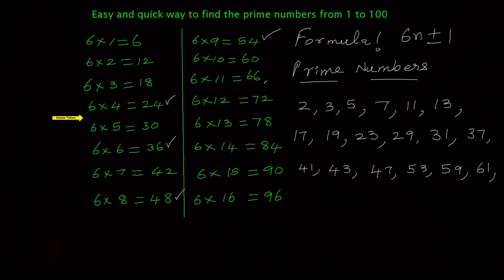Now go for the next multiple 6×11 or 66. Take away 1, again 65 which is not a prime. Add 1: 67, that is a prime number. Now 72, take away 1: 71, which is a prime. Add 1: 73.